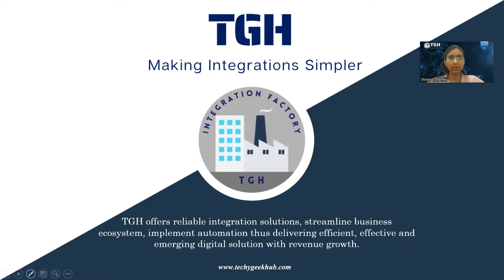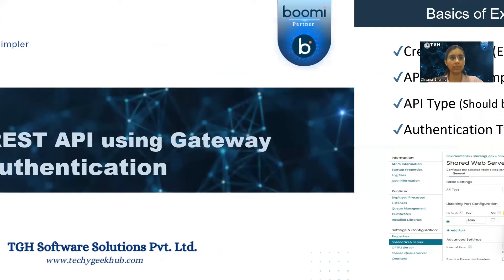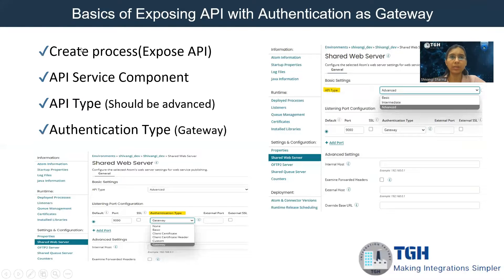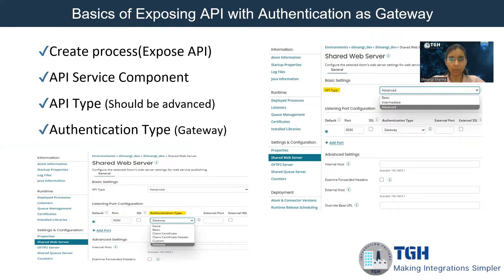We'll go through some series of steps one by one. The very first step is to create a process — a generic process to expose the REST API, wherein the start shape will be of a connector type, that is Web Services Server Connector. Once we create a process, we'll be creating an API service component so that we will create separate endpoints for REST, SOAP, OData, etc.